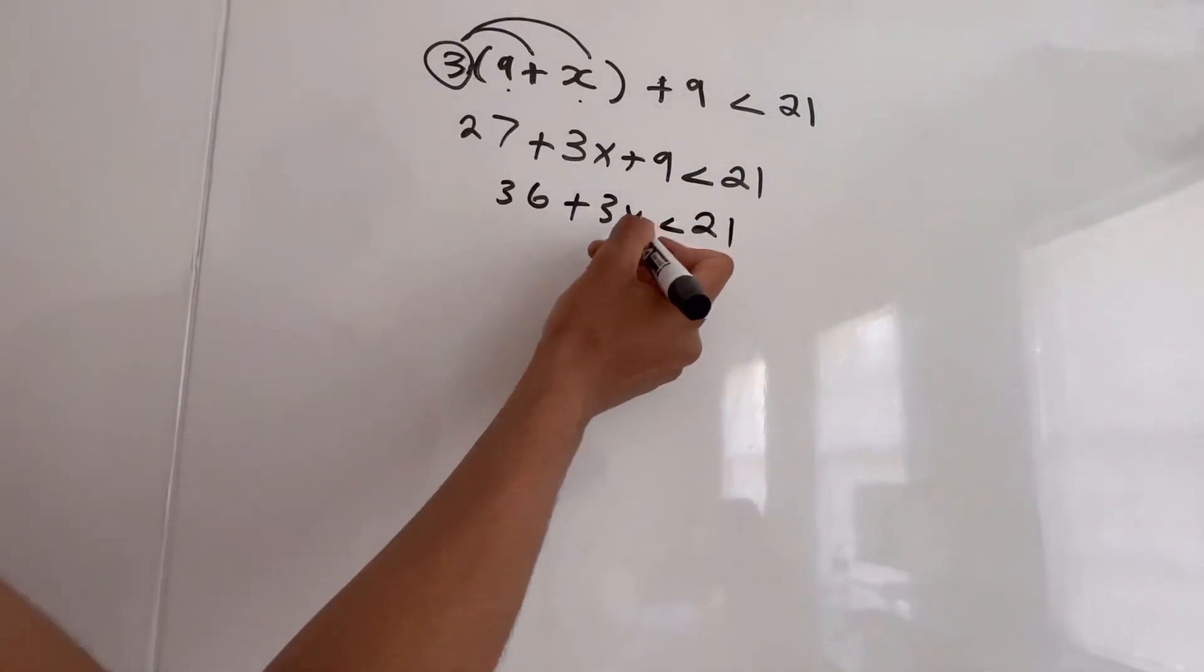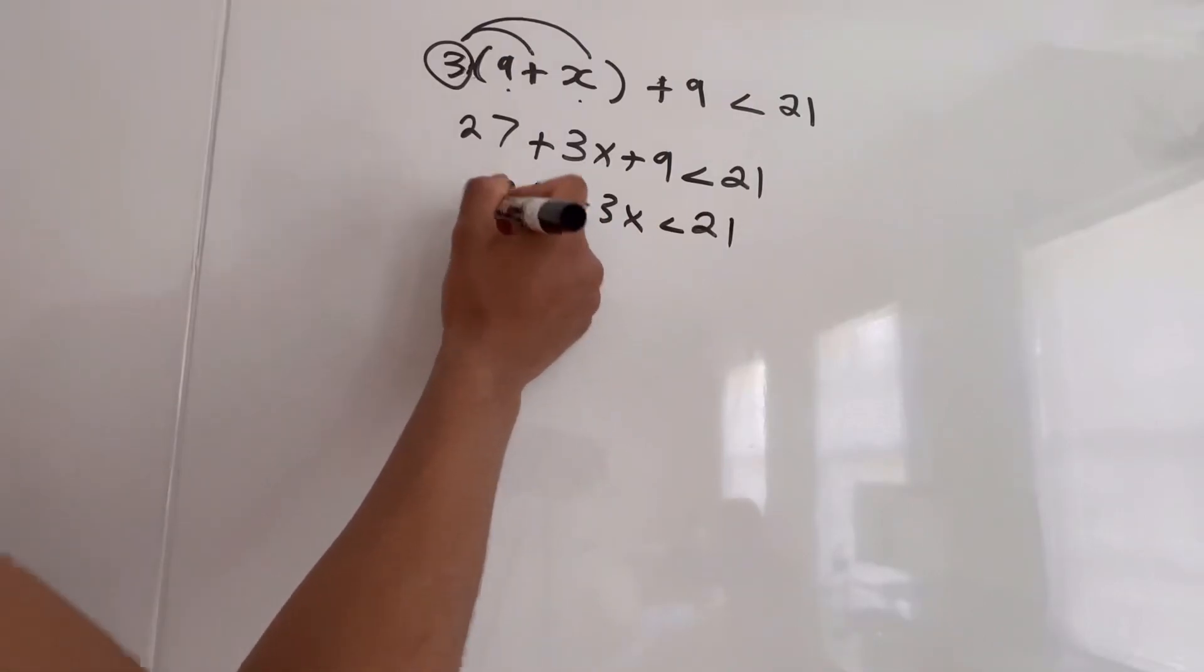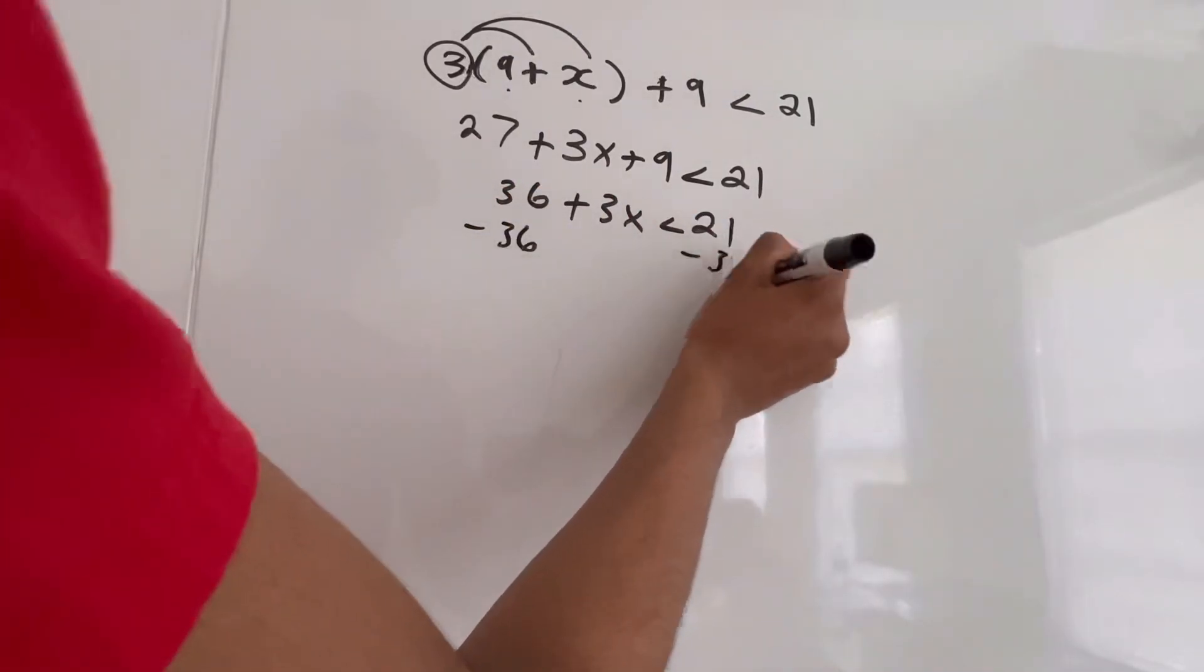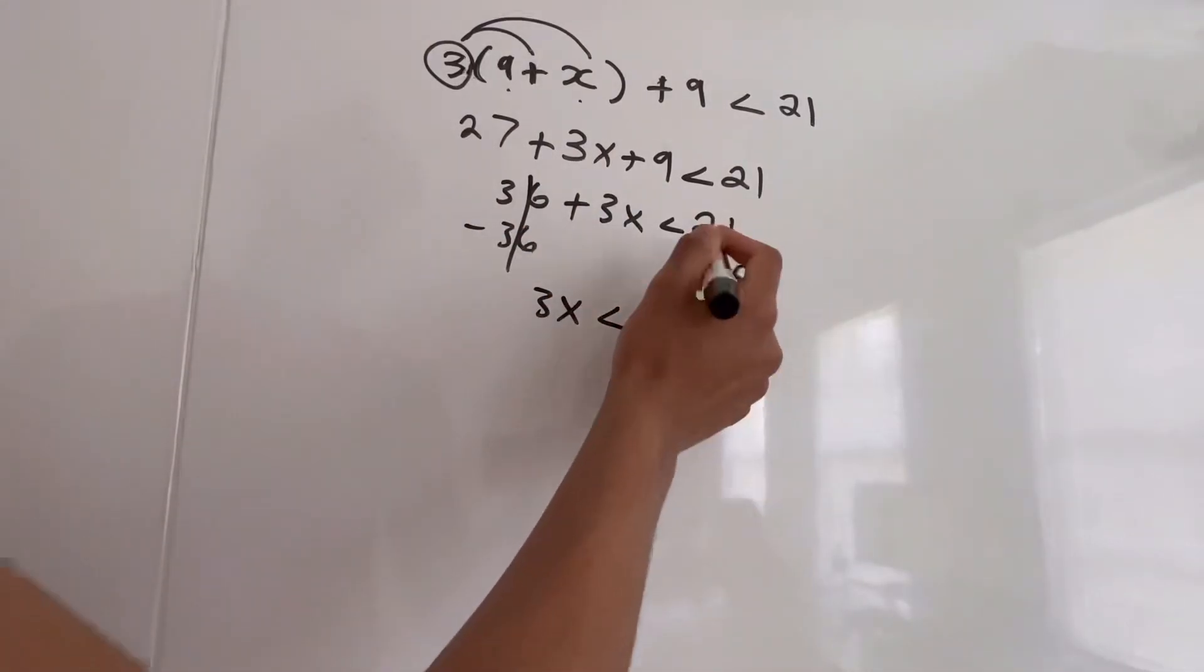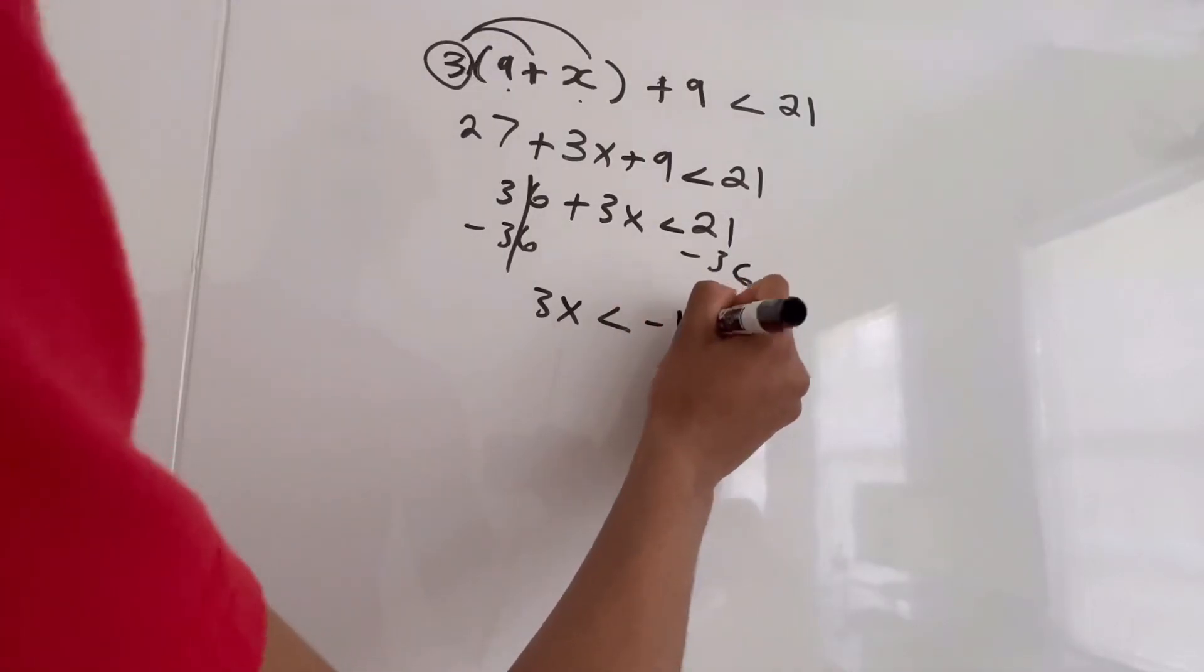And now because we need to isolate x, I'm going to subtract 36 on both sides. These two cancel out, so we're left with 3x is less than 21 minus 36 is negative 15.